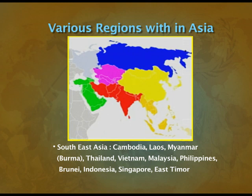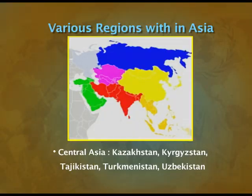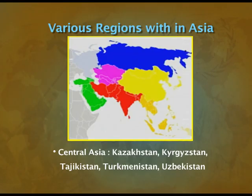Southeast Asia, shown in orange, includes Cambodia, Laos, Myanmar, Thailand, Vietnam, Malaysia, Philippines, Brunei, Indonesia, Singapore and East Timor. The countries shown in pink form the region called Central Asia: Kazakhstan, Kyrgyzstan, Tajikistan, Turkmenistan and Uzbekistan.